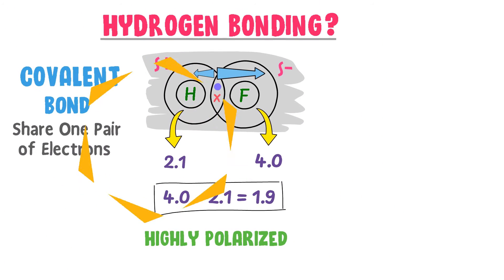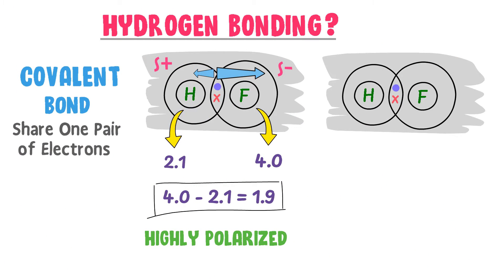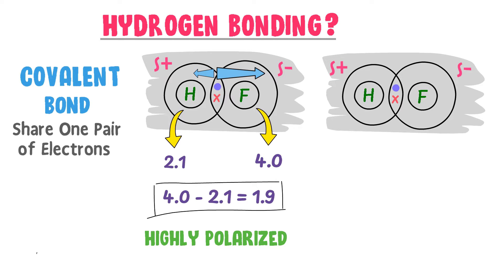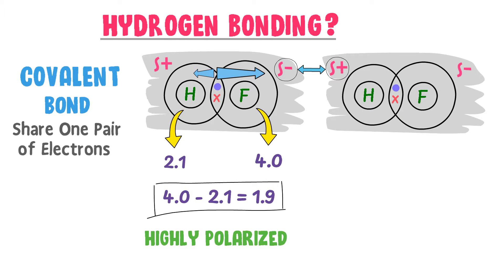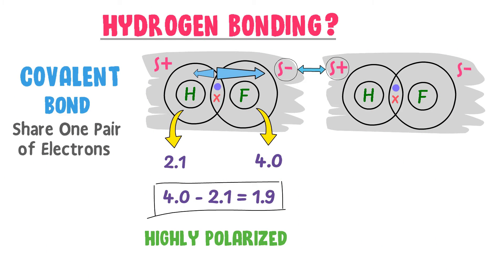Therefore, hydrogen fluoride is a highly polarized molecule. Now consider another molecule of hydrogen fluoride — it also has a partially negative pole and a positive pole. The negative pole of one hydrogen fluoride molecule attracts the positive pole of the other hydrogen fluoride molecule, and an attractive force is produced between them.